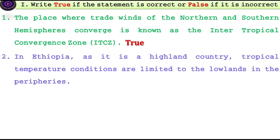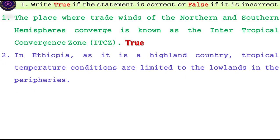In Ethiopia, as it is a highland country, tropical temperature conditions are limited to the lowlands in the peripheries.